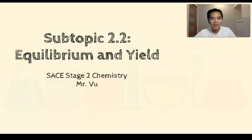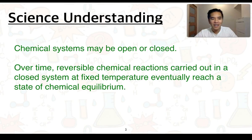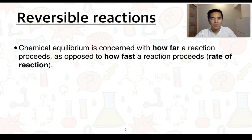Hey guys, in this series of videos we're going to cover subtopic 2.2 on equilibrium and yield. Our first science understandings are that chemical systems may be open or closed, and over time reversible chemical reactions carried out in a closed system at fixed temperature eventually reach a state of chemical equilibrium. To get started, we're going to address what chemical equilibrium is about — it's concerned with how far a reaction proceeds, as opposed to how fast a reaction proceeds, which is what we refer to as the rate of the reaction.